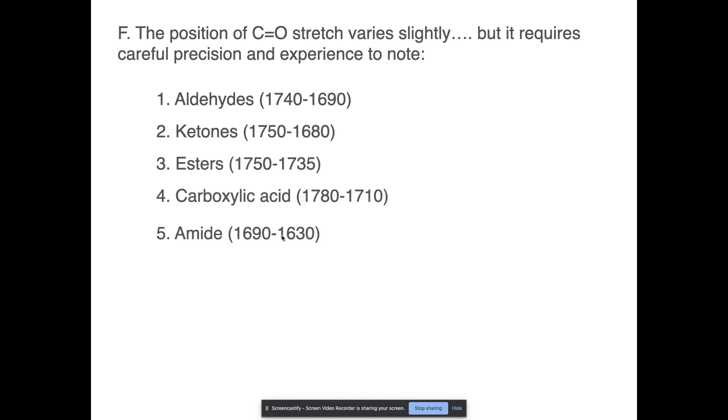Here's the other thing, and this is the last bit, but it requires a lot more precision. The position of where that carbonyl stretch will vary slightly depending on what functional group contains it. It does require careful precision. Do not expect to be able to just know all of these and be able to spot them, especially even the printouts that I just showed you. Those are all really difficult to tell what range we're looking at. But aldehydes occur at this range (1740-1690), ketones (1750-1680), esters (1750-1735), carboxylic acids (1780-1710), and then amides (1690-1630). You have to have a really precise graph in order to tell what's going on with regards to these functional groups. It's within the range of that carbonyl stretch. You can tell based on slight variations of where it's located on the graph, whether it's aldehyde, ketone, ester, carboxylic acid, or amide.